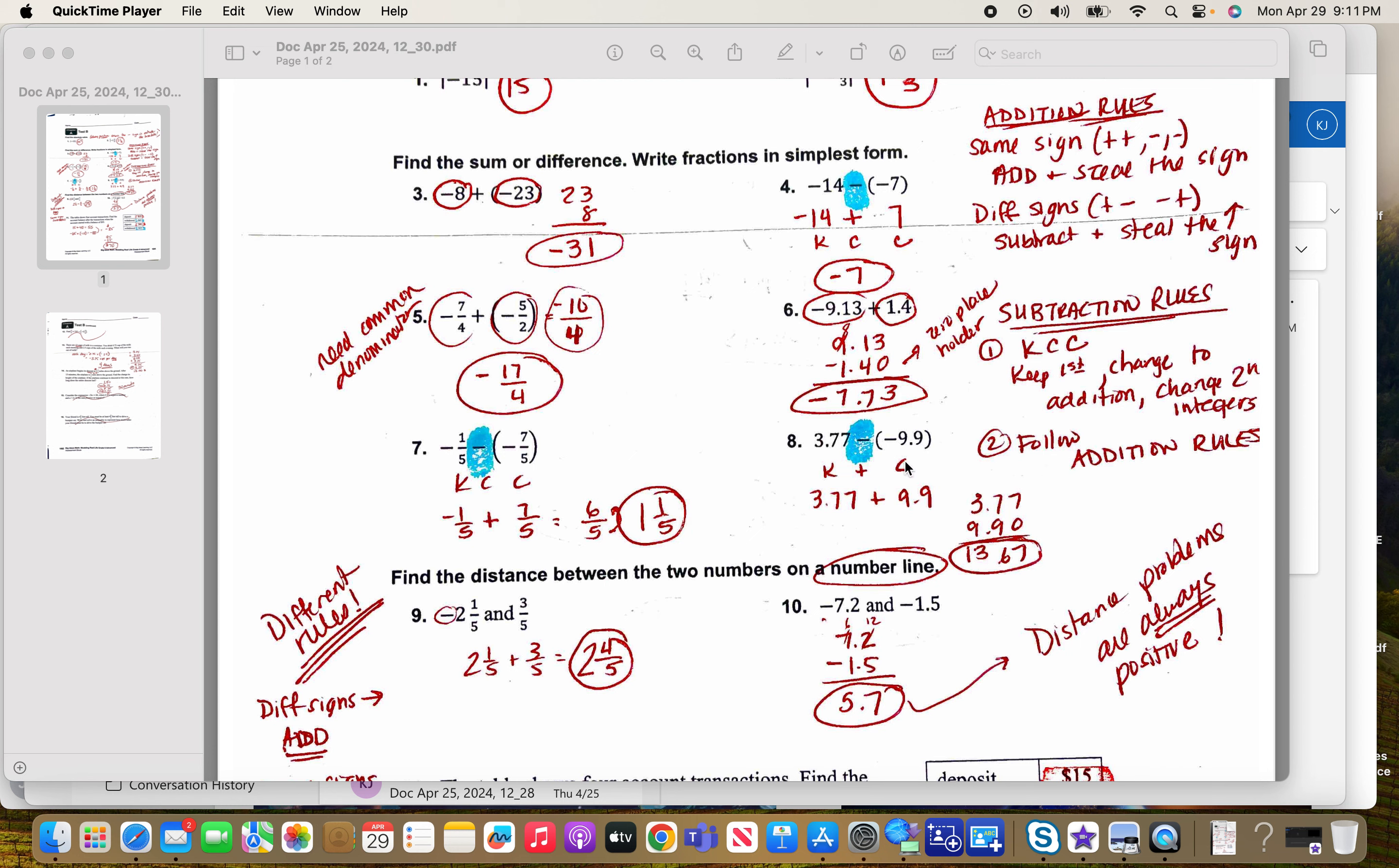And then decimals, same thing, keep change to addition, change from negative 9.9 to positive 9.9. We have two positives now. We're going to follow the addition rules, so we're going to stack them, line up our decimal points, add 6, carry the 1. We have 13, there's a decimal right there, it's kind of hidden, but it's there, 13.67. So again, on your test tomorrow, when these are all mixed up, I would just remind yourself of the subtraction problems.